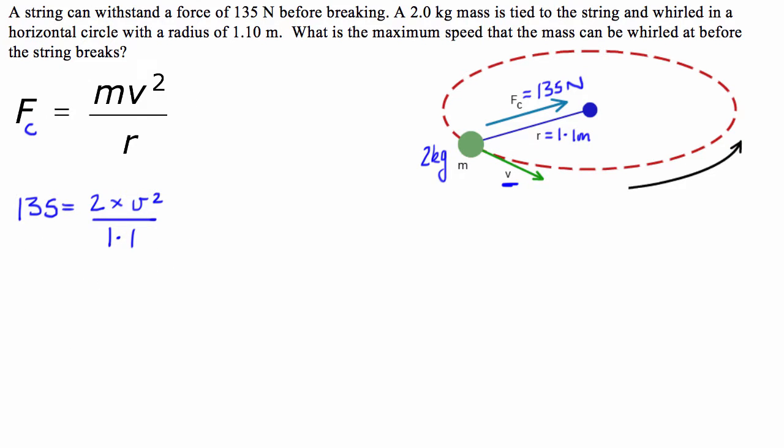Now I can do a little bit of algebra and rearrange this to make v equal to the square root of 135 times 1.1 all divided by 2. Now if you guys don't get what I did there, you need to brush up on your algebra ASAP.